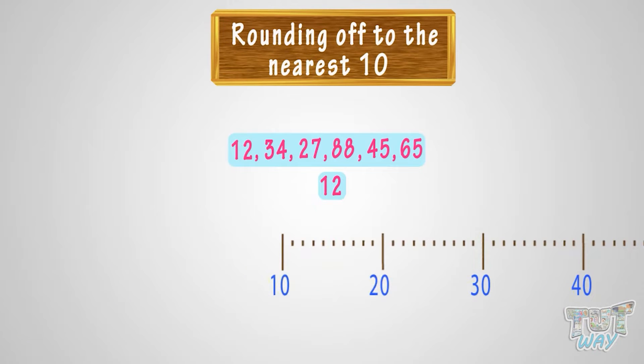Whenever you want to round a number, there are always two options. Either we can round it down to 10 or round it up to 20. Think, which option do you think is more apt? Here is a rule to help you. We have a 5 mark midway between the two 10s, always. If the number is above the 5 mark, you round it up. And if the number is below the 5 mark, you round it down.